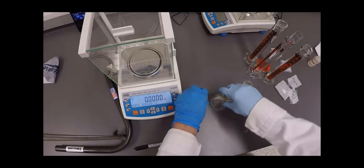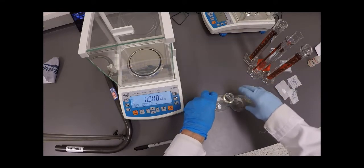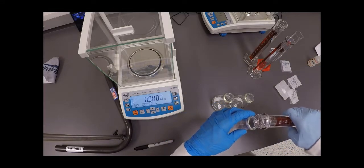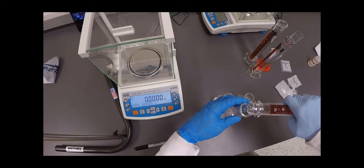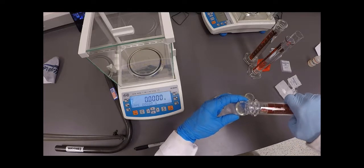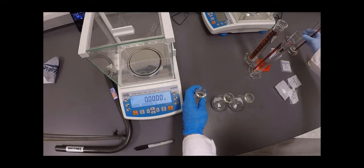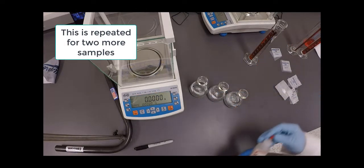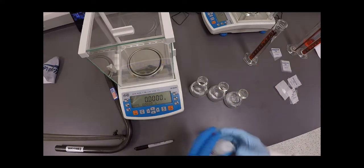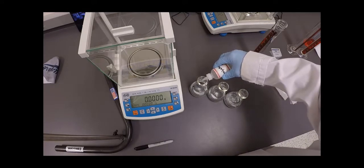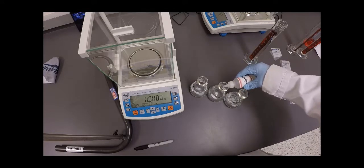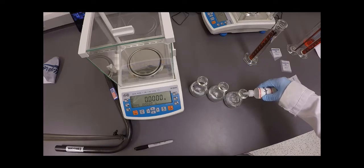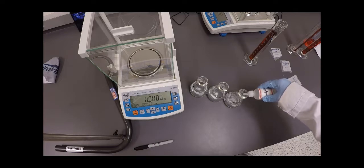Now to each of these three Erlenmeyers, I am going to add 100 milliliters, about, of water. Finally, I'm going to add two drops of phenolphthalein to each flask. And this is the indicator. So once this stuff becomes basic, it'll turn pink.